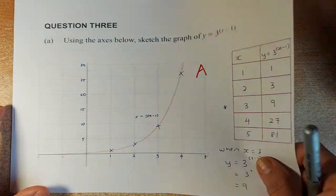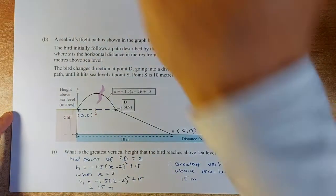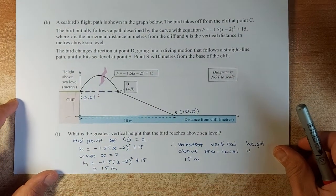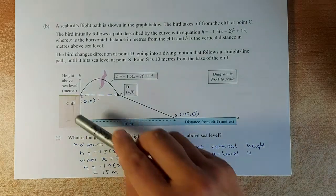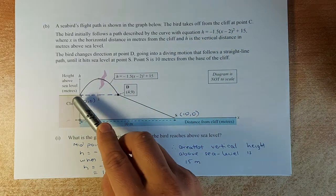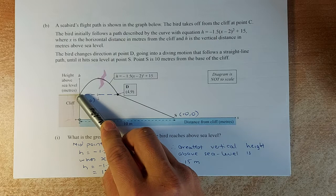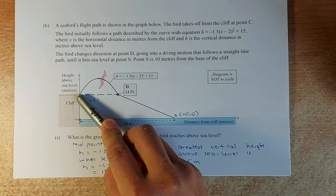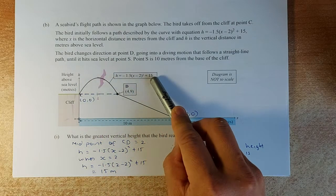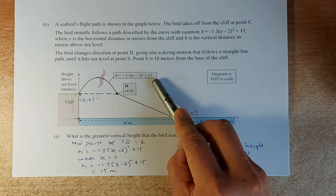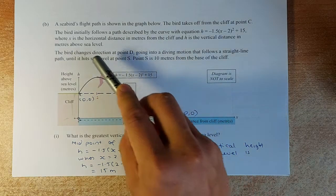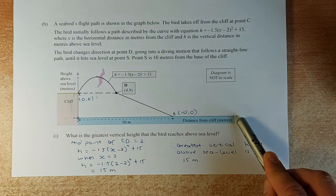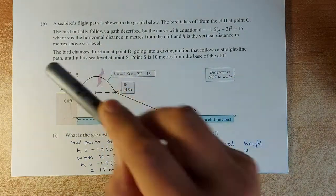Now we do the second part, part B. A seabird's flight is shown in the graph below. The bird takes off from the cliff at point C. The bird follows a path using this equation: h equals -1.5(x-2)² + 15, where x is the horizontal distance and h is your height. The bird then changes direction at D in a diving motion that follows a straight line until it hits the sea at point S.